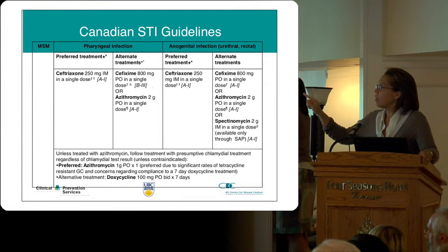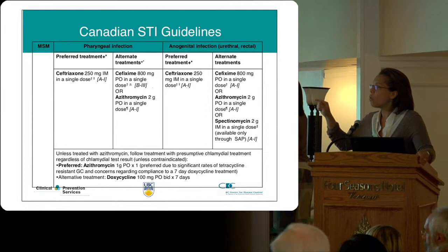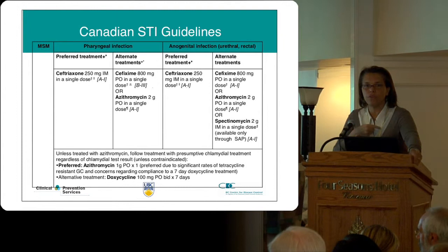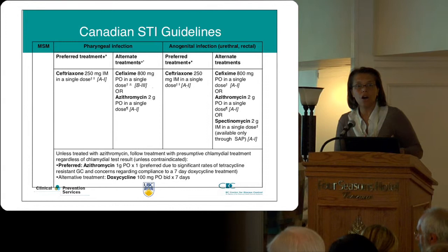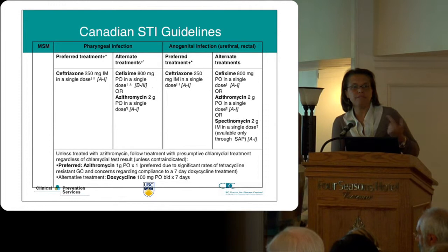Alternate treatments are cefixime 800 mg PO — again, double the previous dose — or azithromycin 2 grams. At that dose, people do find azithromycin difficult to take, so you need to prepare patients for possible stomach discomfort. If they are nauseous and vomit, we need to consider that they haven't been adequately treated and think about other alternatives.